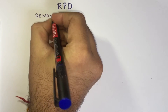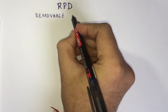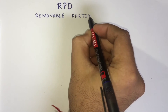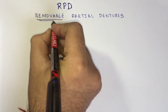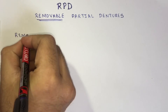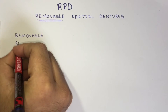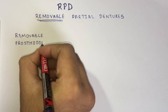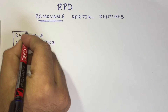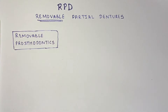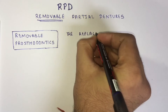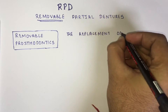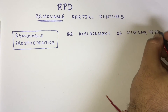In today's session we are going to study about the removable partial dentures, or RPD. According to the glossary of prosthodontic terms, removable prosthodontics is defined as the replacement of missing teeth and the supporting tissues with a prosthesis designed to be removed by the wearer.